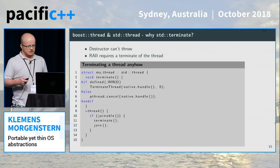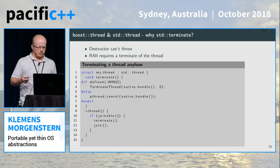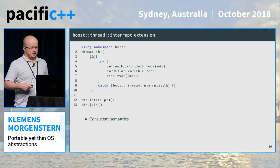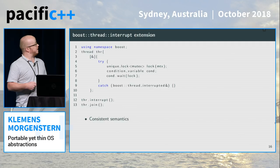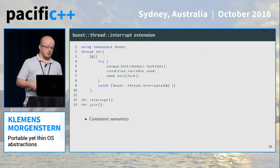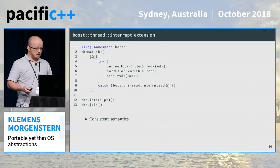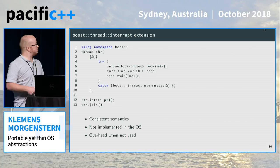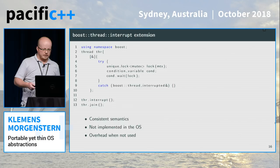Having native_handle is an important point — it gives you access to whatever the operating system provides. Boost.Thread has an extension where you can interrupt a thread: instead of using pthreads cancel directly, it implements an interrupt mechanism on top so that at a cancellation point it throws a boost::thread_interrupted object, giving consistent semantics on different platforms. But it's not implemented in the OS — it's built on top — so if you don't use it, you have overhead. That's likely why it was rejected from the standard.